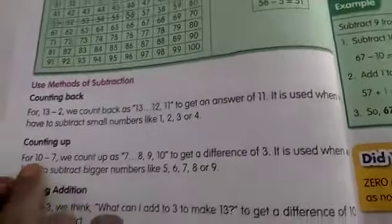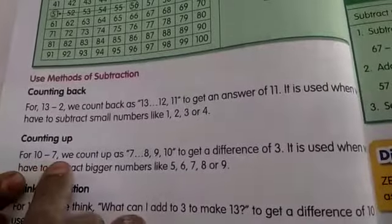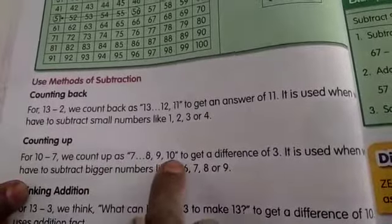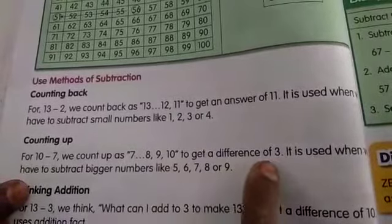So what he told here children? We are counting 10 minus 7. Counting up. So we are counting up at 7, 8, 9, 10. So the difference of how many? 3 children.